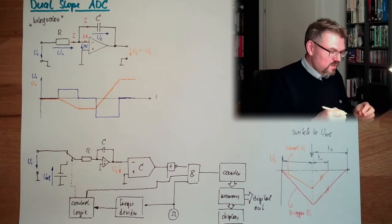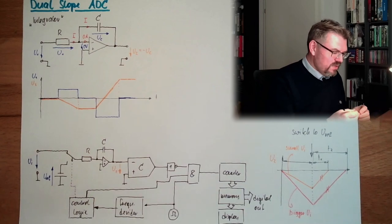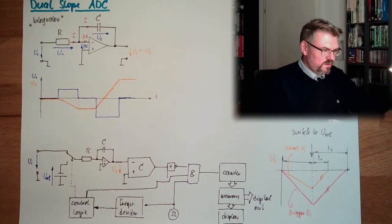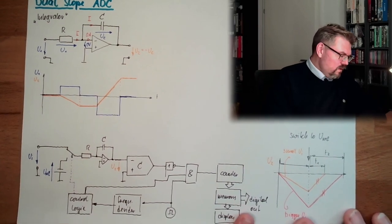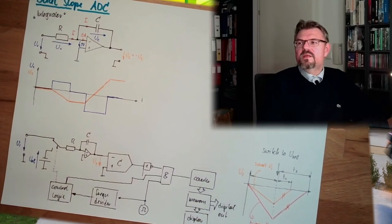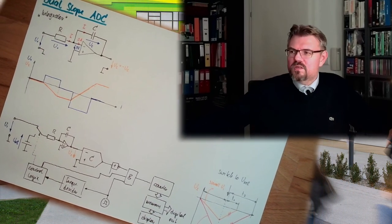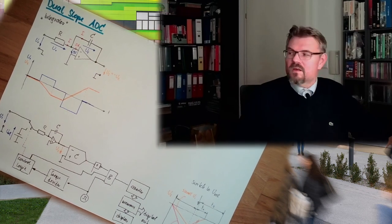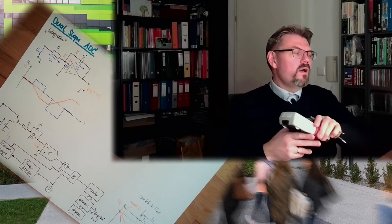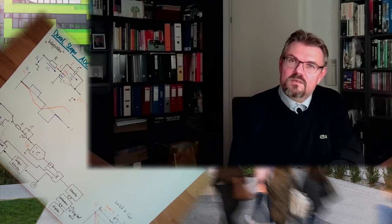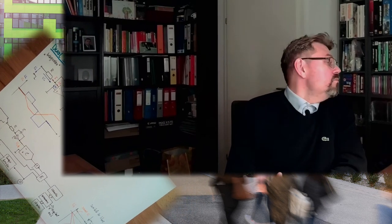This is a very usual approach, dual slope ADCs, very very usual. Well, we need some auxiliaries, we need this integrator and so on, but you see it's not that complicated. Usually in such things here, a dual slope converter is inserted in a measurement device, in a digital multimeter. Dual slope ADCs are inside.